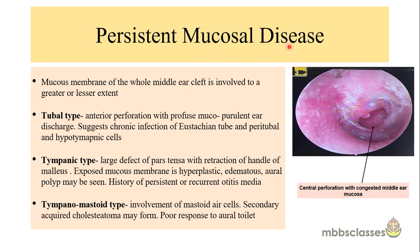Persistent mucosal disease is the second variant of chronic otitis media without cholesteatoma. In persistent mucosal disease, the mucous membrane is always active — the mucosa of the whole middle ear cleft is involved, it is edematous, inflamed, and the ear is always discharging. There are three subtypes: tubal type, tympanic type, and tympanomastoid type.